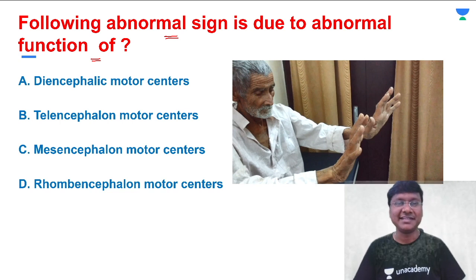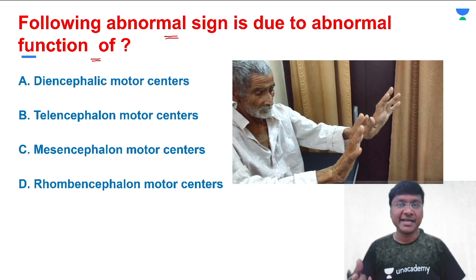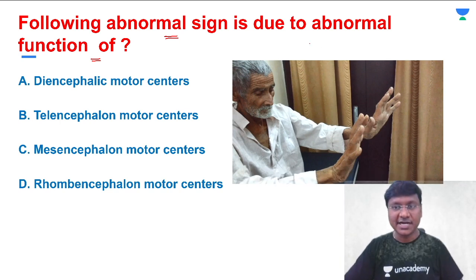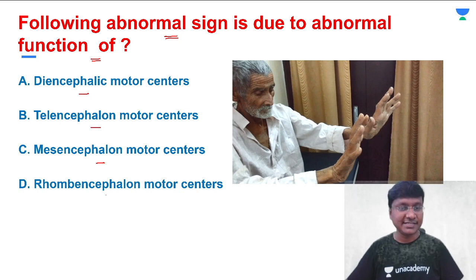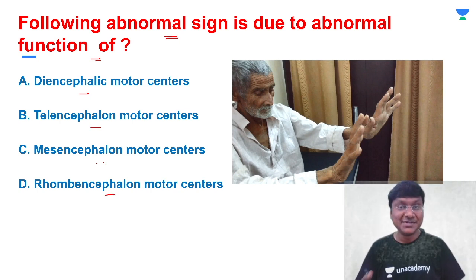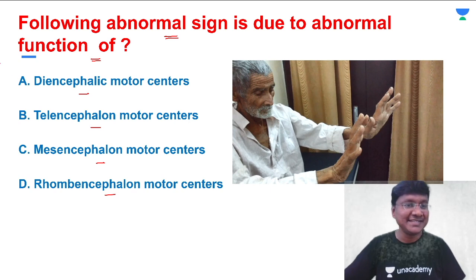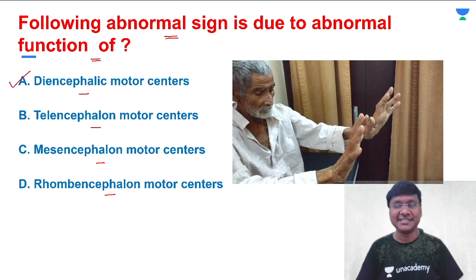Everyone is aware that it is a flapping tremor. But the question is about what is the mechanism — why does that occur? That is due to abnormal function of diencephalic motor centers, telencephalon motor centers, mesencephalon motor centers, or rhombencephalon motor centers. The answer to this question is diencephalic motor centers.